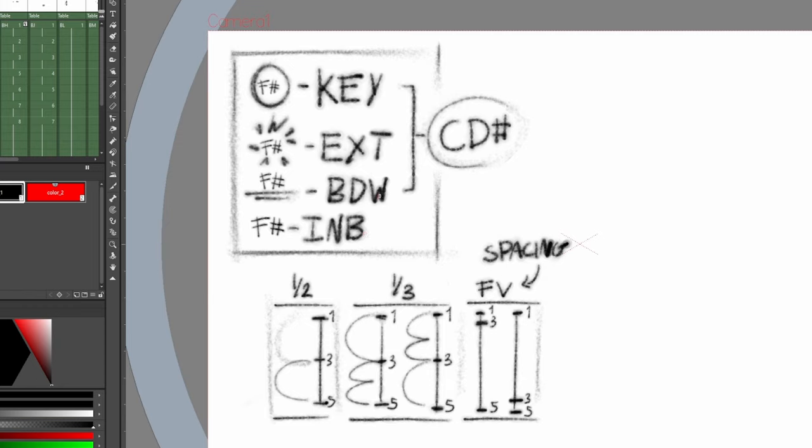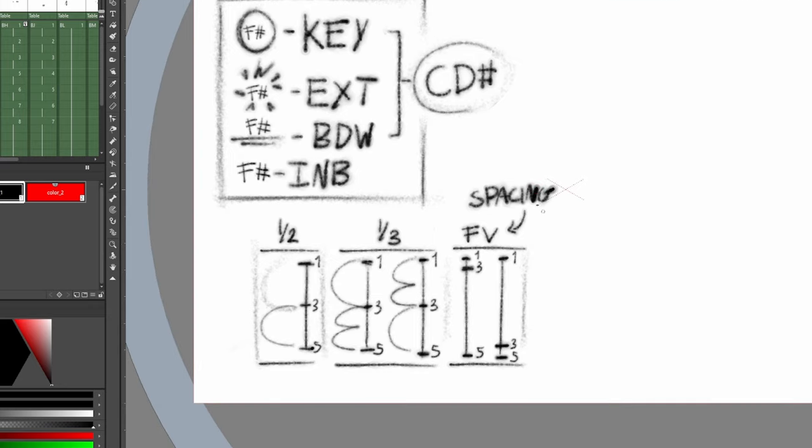So keys, extremes, and breakdowns are our core drawings. That's what we look for first when we read a timing chart.